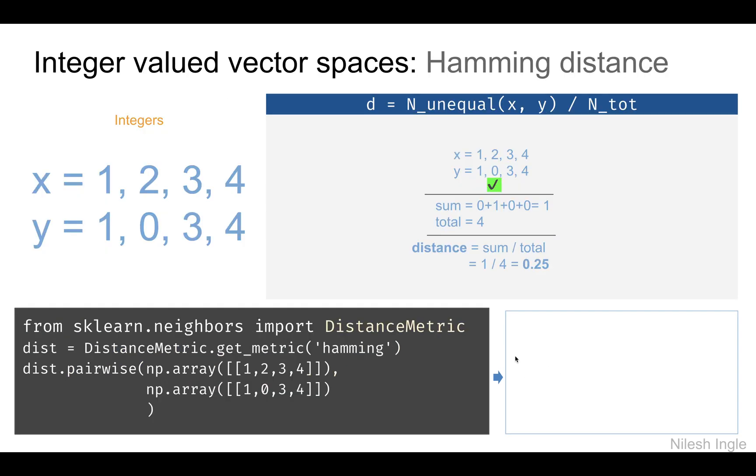Now let's look at integer valued vector spaces. The first one is Hamming distance. What it does is find the inequality. If we have a set of integers x and y, and we want to find the Hamming distance between these two sets, we see that both x and y have 1, 3, and 4.